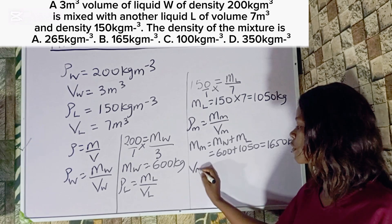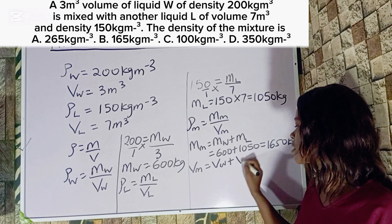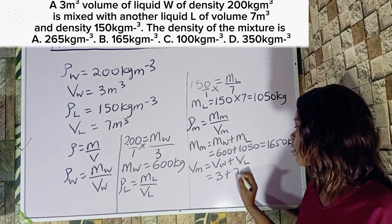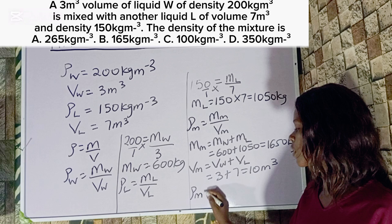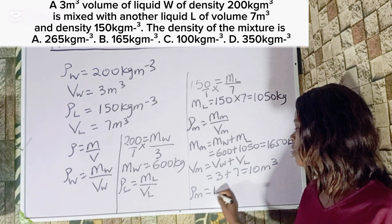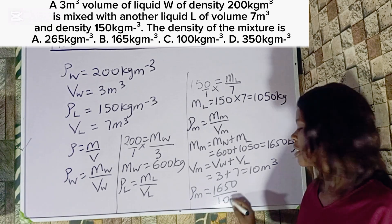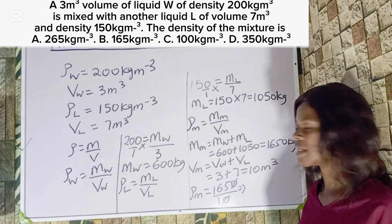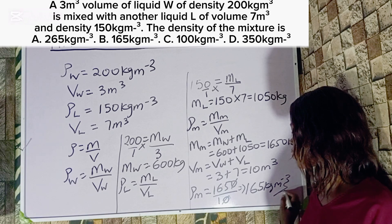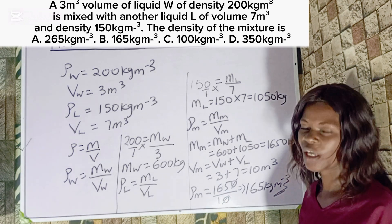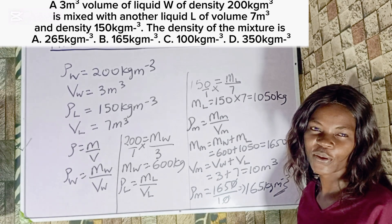The volume of the mixture equals V_W plus V_L, which equals 3 plus 7, that is 10 meter cube. The density of the mixture equals mass of mixture divided by volume of mixture, which is 1650 divided by 10. This gives us 165 kg per meter cube. This is how to solve this type of problem. The correct option is Option B.